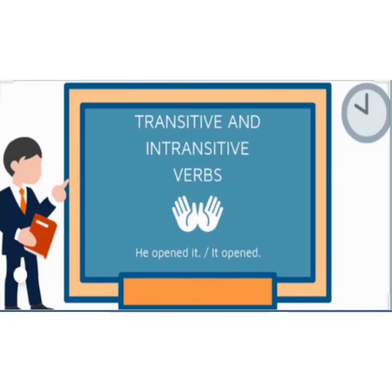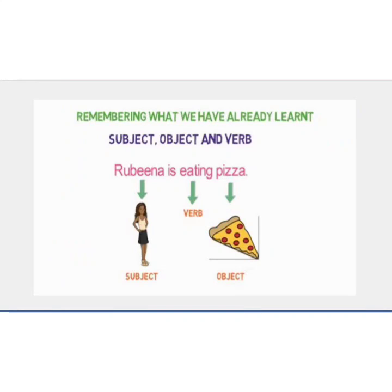A verb is an action word, such as eat, sleep, run, wash, play, and many more. In this context we'll also revise subject, object, and verb within a sentence.